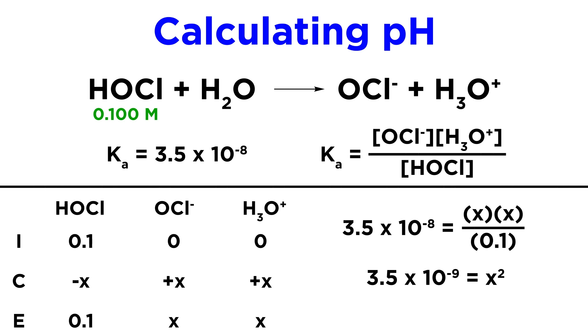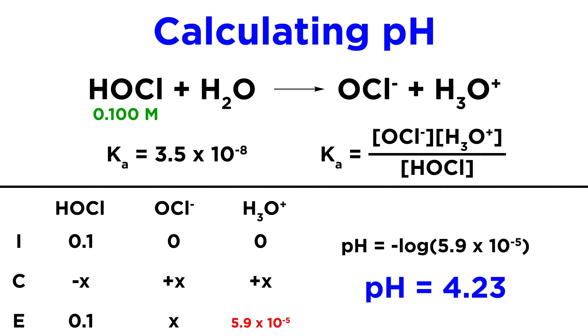Multiplying both sides by 0.1, and then taking the square root, will allow us to solve for x, which will be 5.9 times 10 to the negative 5. Taking the negative log, we get 4.23 as the pH of this solution.